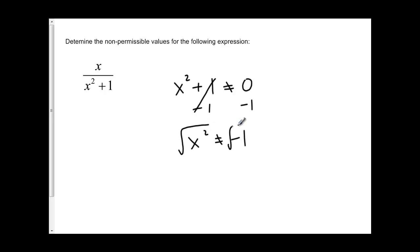To get rid of that squared, we're going to take the square root, and we get x is not equal to the square root of negative 1. Since we know the square root of negative 1 does not exist, because you can't take the square root of a negative, you get i or an imaginary number.